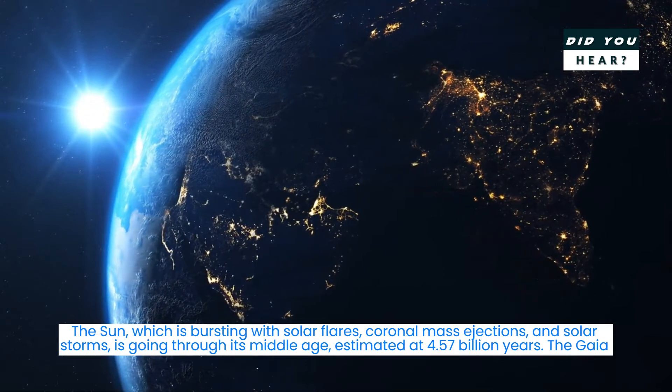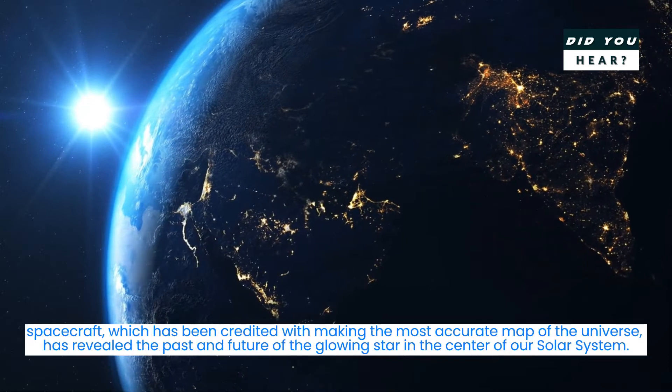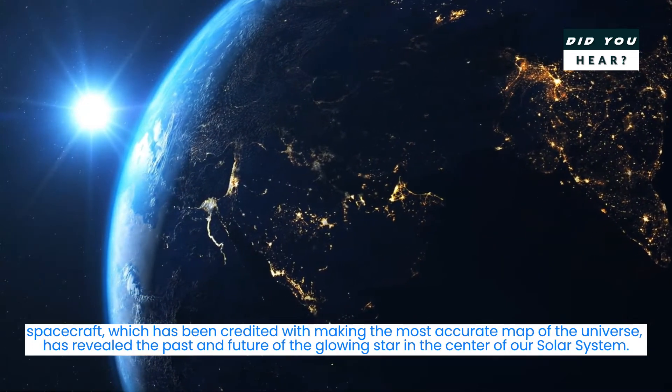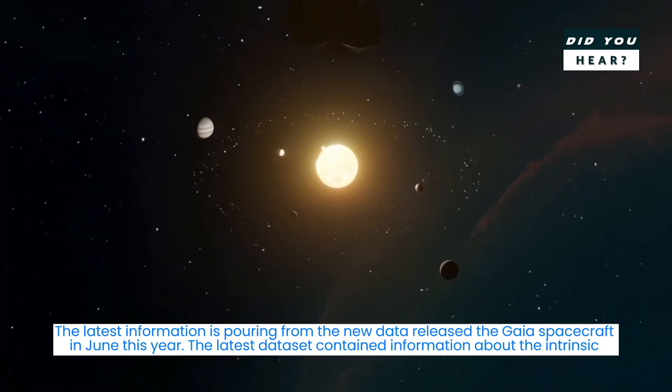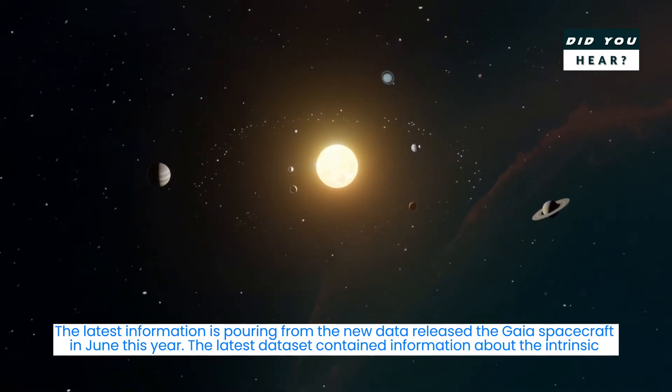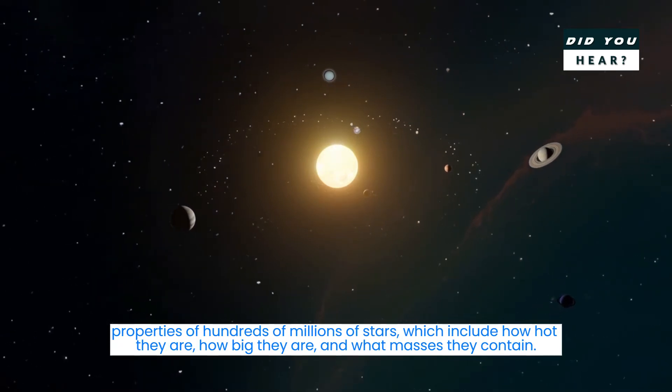The Gaia spacecraft, which has been credited with making the most accurate map of the universe, has revealed the past and future of the glowing star in the center of our solar system. The latest information is pouring from the new data released by the Gaia spacecraft in June this year.